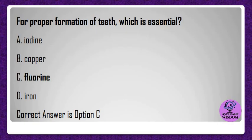For proper formation of teeth, which element is essential? A) Iodine, B) Copper, C) Fluorine, D) Iron. Correct answer is option C.